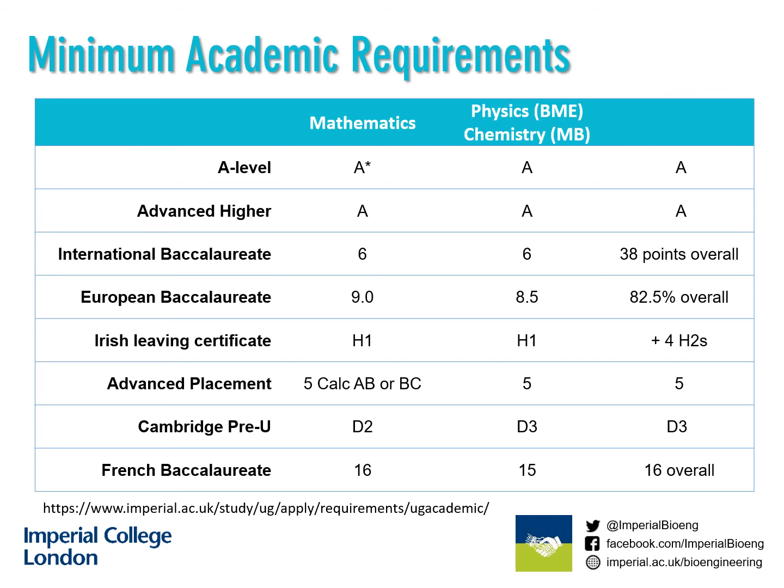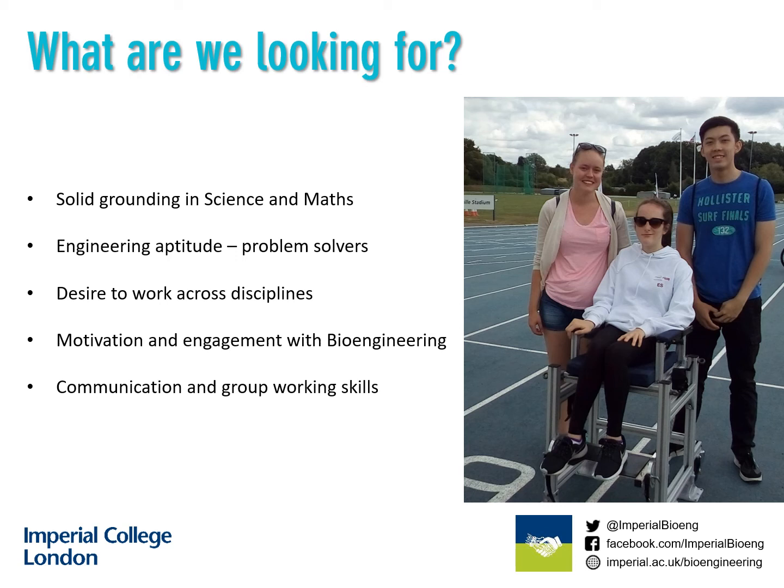To gain a place on our degree programme, we will look for our students to have attained a minimum standard of A-level or equivalent, at grade A* in maths and A in physics for biomedical engineering, or A in chemistry for molecular bioengineering, along with an A in a third topic. These are minimum grades and a typical offer may be higher depending on your predicted grades and performance at interview. As well as academic achievement, we look for our students to have a good understanding of maths and science and to be able to answer problem-solving questions on those and other engineering-based topics. Our candidates should have a real desire to work across the engineering disciplines, along with a strong motivation to be a bioengineer.